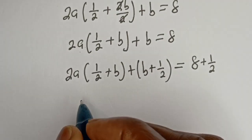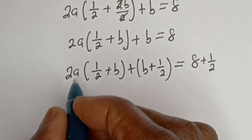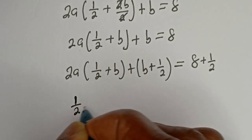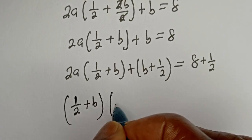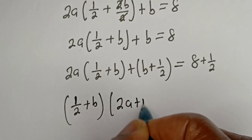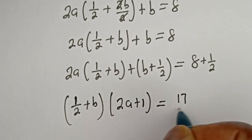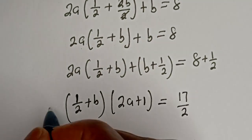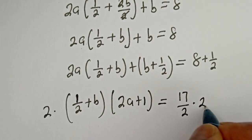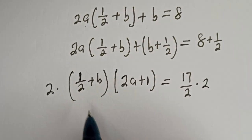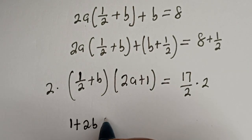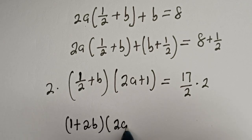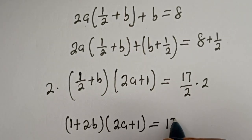The whole of this can be written as 1 divided by 2 plus b, bracket 2ab plus 1, equal to 17 divided by 2. Now let's multiply both sides by 2. We have 1 plus 2b bracket 2a plus 1 is equal to 17.